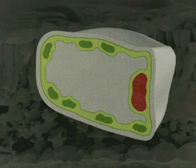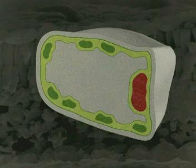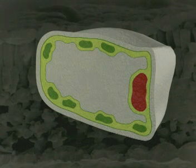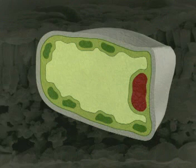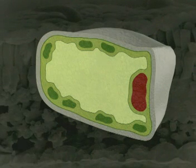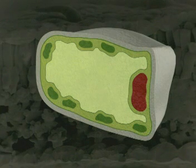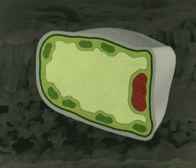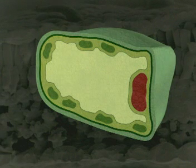The green blobs are chloroplasts which are the site of photosynthesis. A vacuole takes up most of the space inside the cell — it's filled with a solution of sugars and salts. Surrounding the cytoplasm is a cell membrane, and on the outside a rigid cell wall gives the cell support.